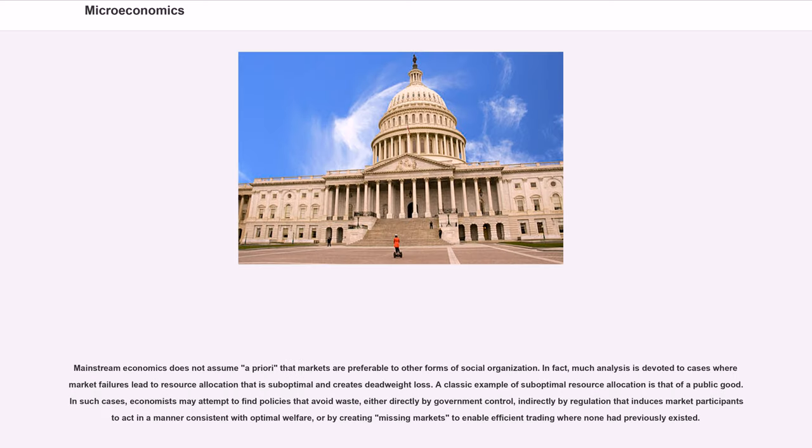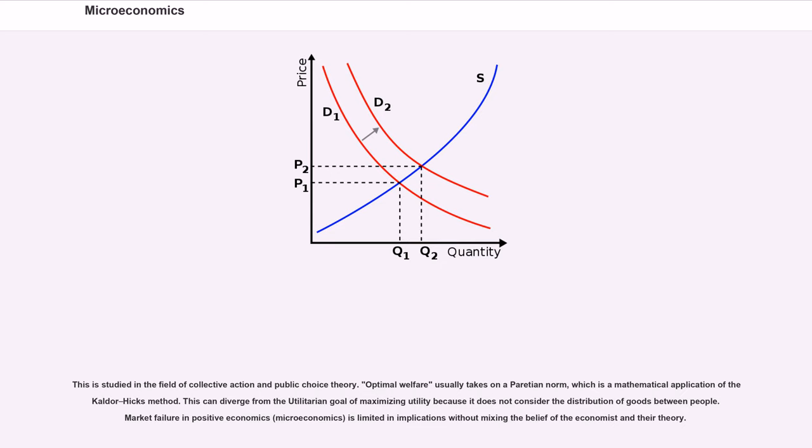Mainstream economics does not assume a priori that markets are preferable to other forms of social organization. In fact, much analysis is devoted to cases where market failures lead to resource allocation that is suboptimal and creates deadweight loss. A classic example of suboptimal resource allocation is that of a public good. In such cases, economists may attempt to find policies that avoid waste, either directly by government control, indirectly by regulation that induces market participants to act in a manner consistent with optimal welfare, or by creating missing markets to enable efficient trading where none had previously existed.